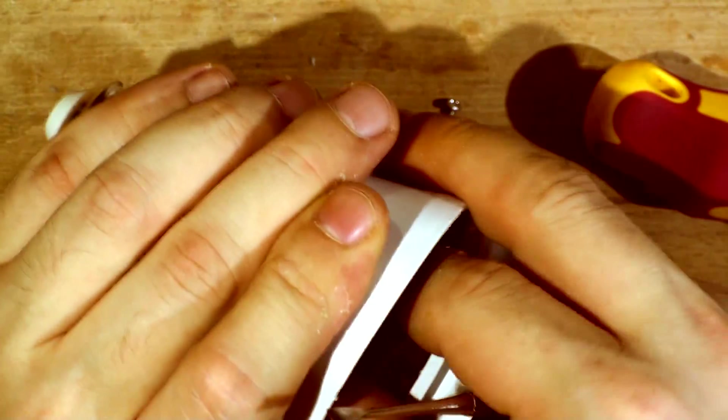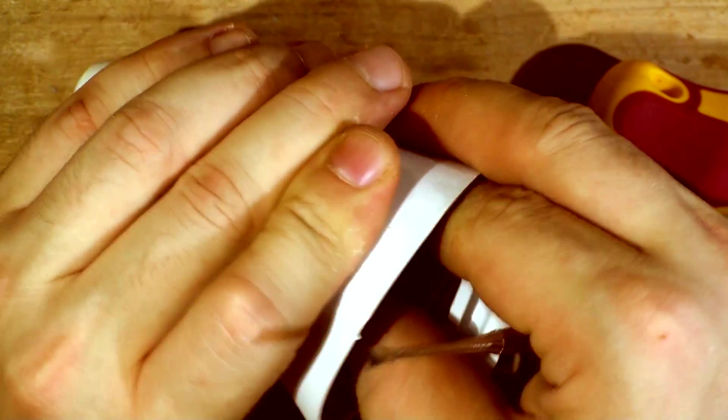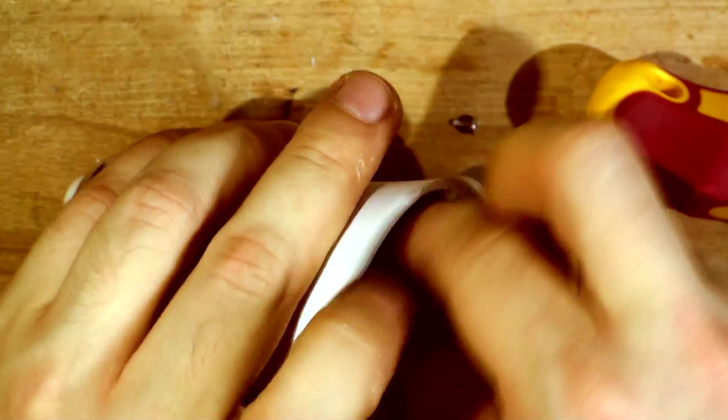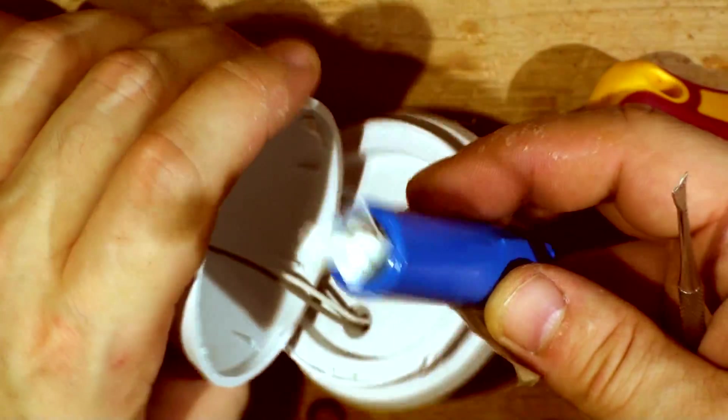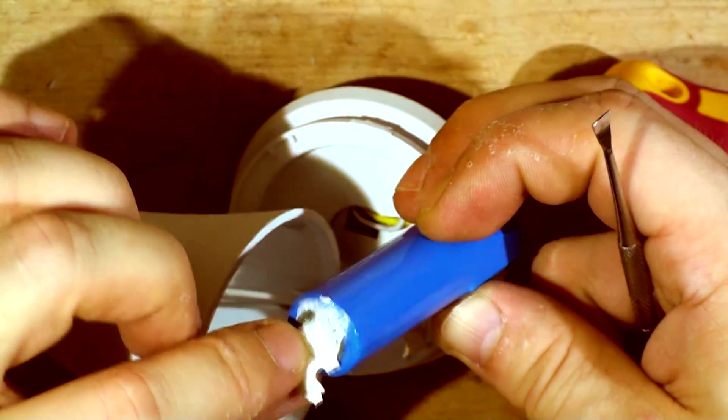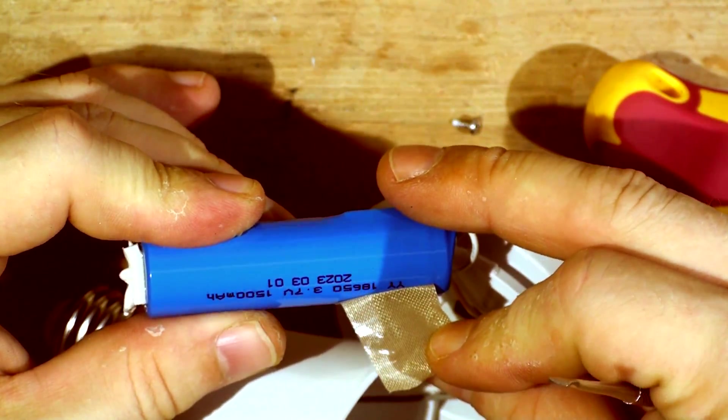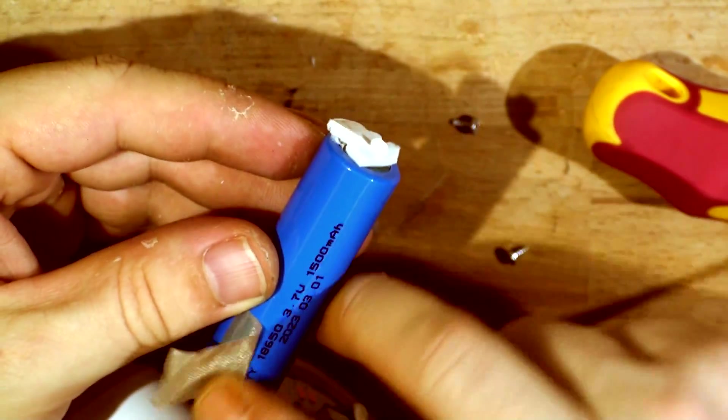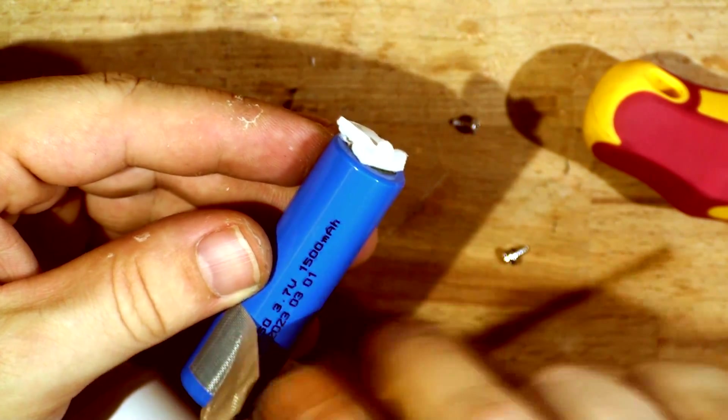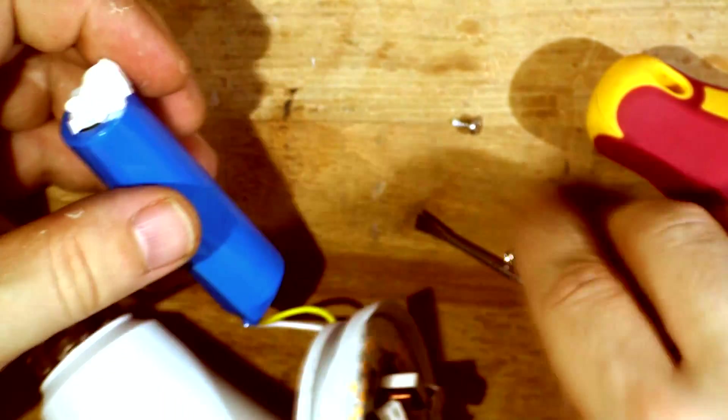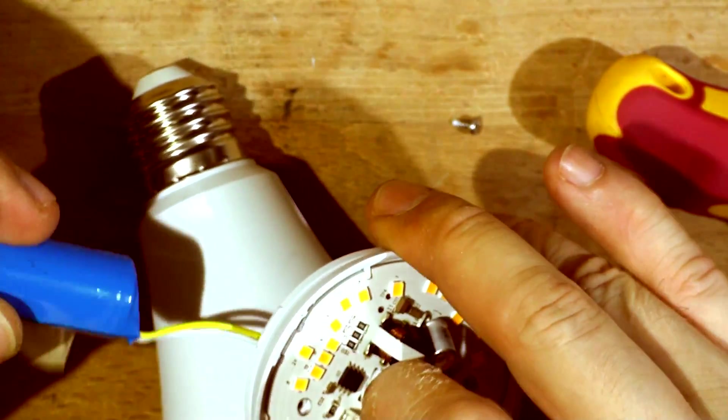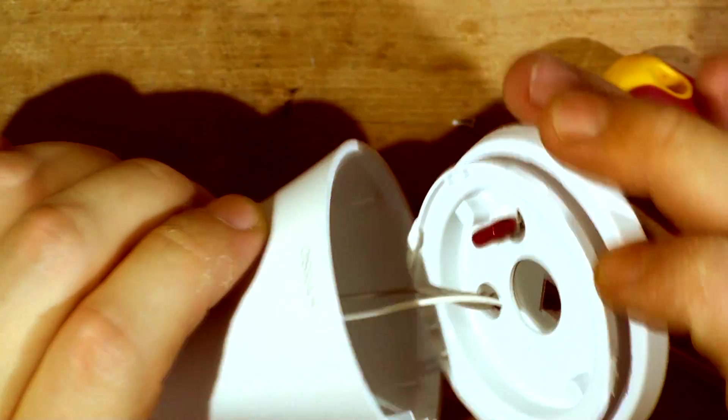And it's a standard lithium battery that is stuck in the socket there, probably glued in. So yeah, just glued in with double-sided tape in the bottom. Standard 18650, 1500 milliamps, 3.7 volts. It is a lithium battery.